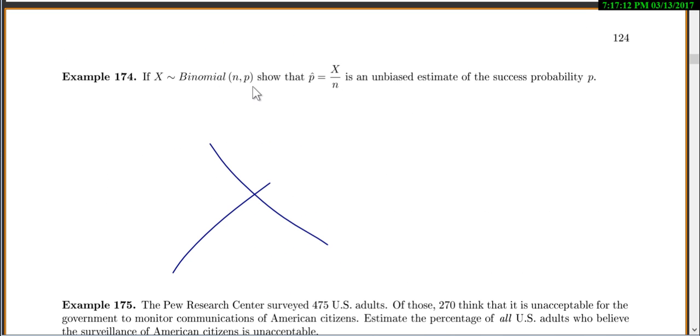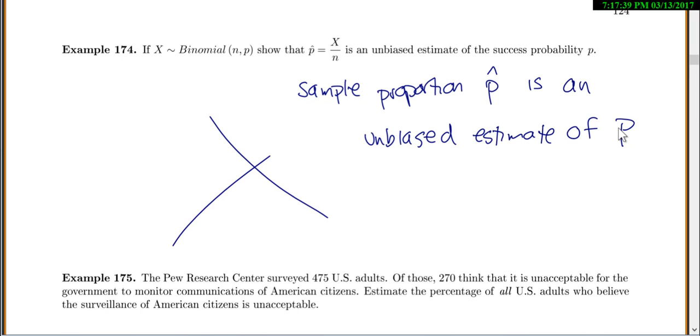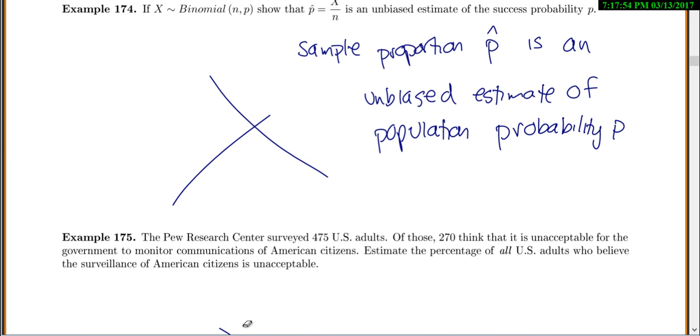If you have a binomial distribution with n and p, then if you look at your sample proportion, the sample proportion p-hat is an unbiased estimate of the population probability p. We're just not going to prove it.